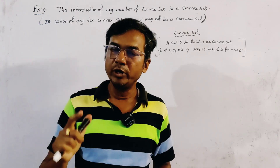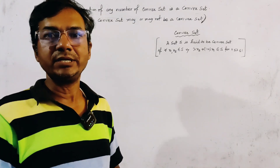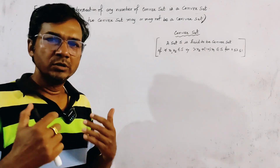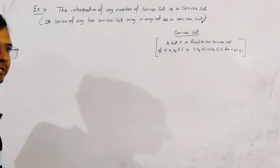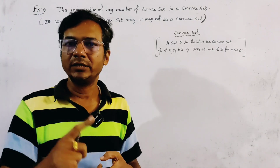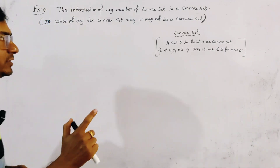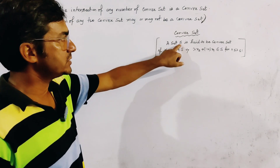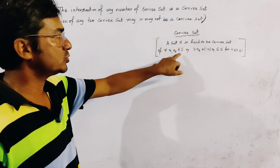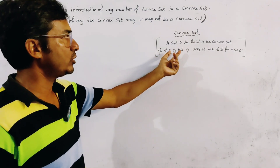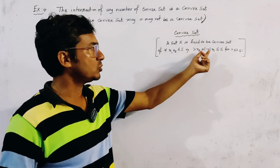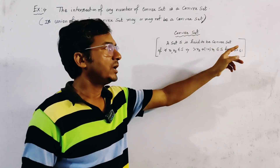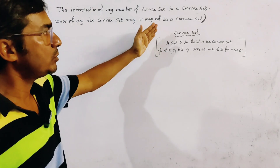In this lecture, we are going to discuss about the intersection and union of two convex sets, or more than two convex sets — that is, any number of convex sets. We first define the convex set. A set S is said to be a convex set if for all x1, x2 belonging to S, the convex combination lambda*x2 + (1 - lambda)*x1 also belongs to S, for any value of lambda where 0 ≤ lambda ≤ 1. This is the definition of a convex set.